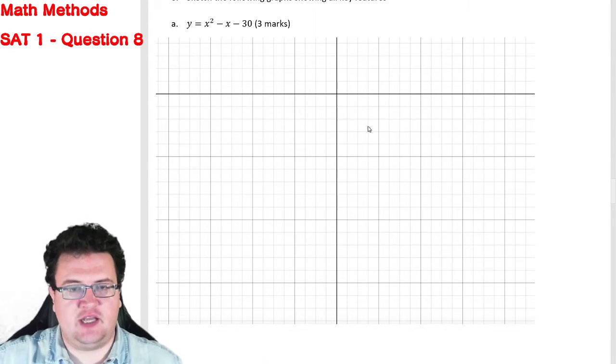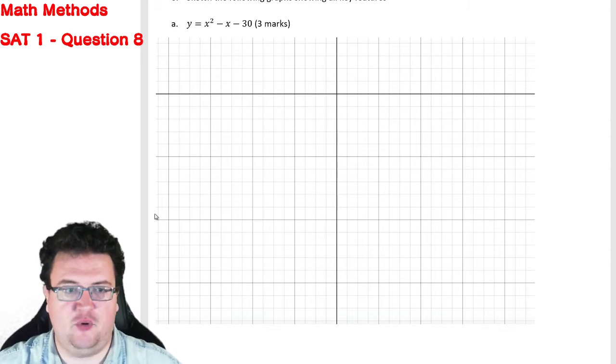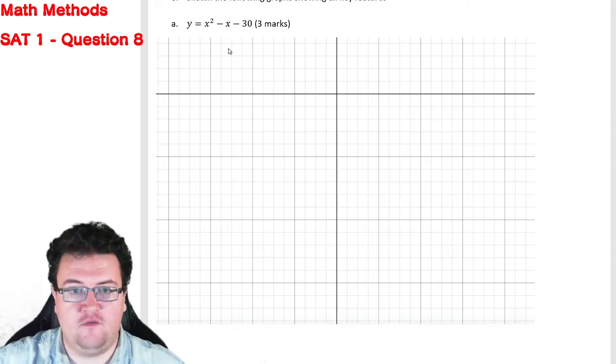The important thing to realize is that this is in full quadratic form, which means that the only thing that we can really pull out of it straight away is the location of my y-intercept. When x is 0, y is going to be equal to minus 30.